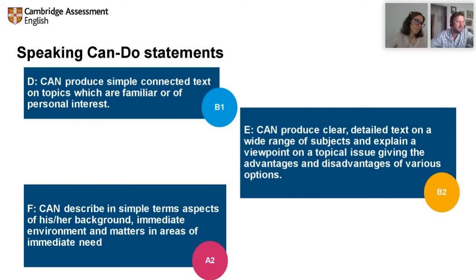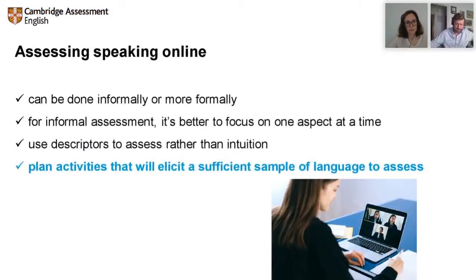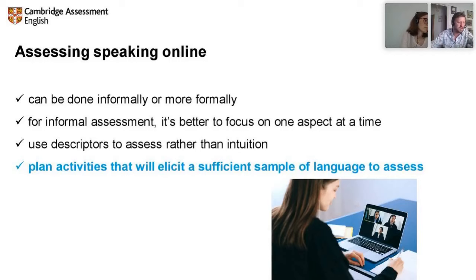Using these can-do statements and making students aware of them — you can use them as checklists across the period of a year. Show them the can-do statements: 'what you will be able to do at the end of this year' is a really nice way of structuring any course or curriculum and gives them something to aim for. Once we have a clear set of descriptors, we need to plan or design activities that will elicit a sufficient sample of language to assess — doing things as fairly and consistently as possible.